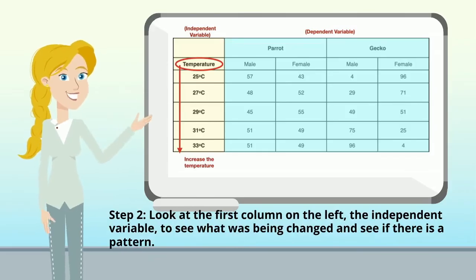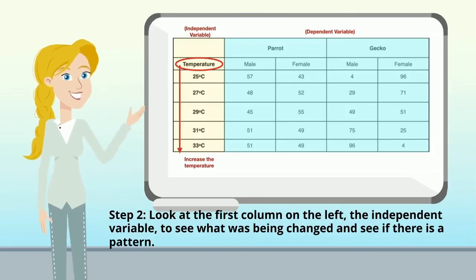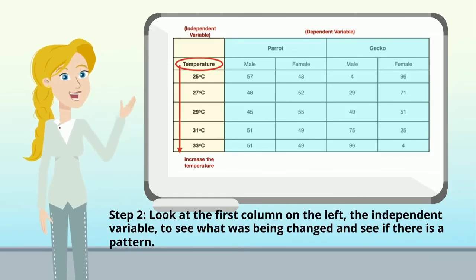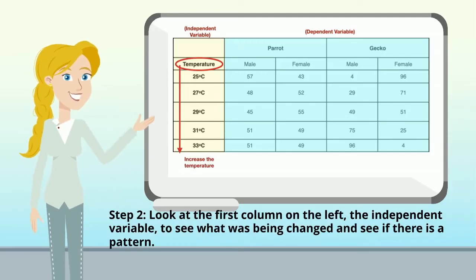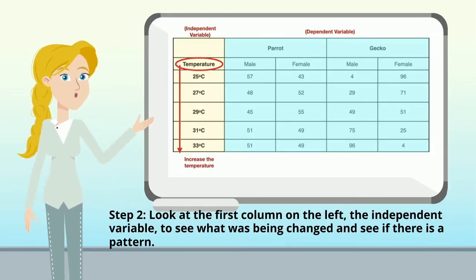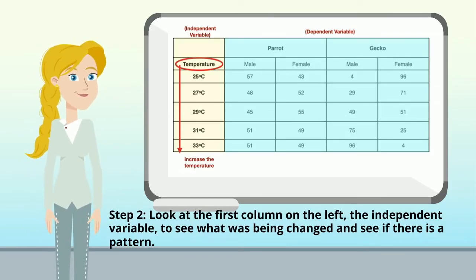In step two, we want to look at the first column on the left — the independent variable — to see what was being changed and if there's a pattern. We can see that the temperature is getting larger, so there's an increase in temperature.